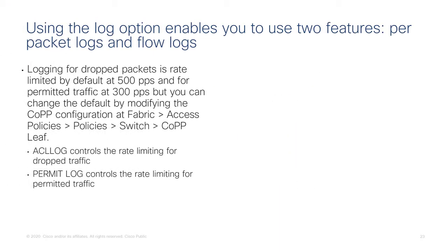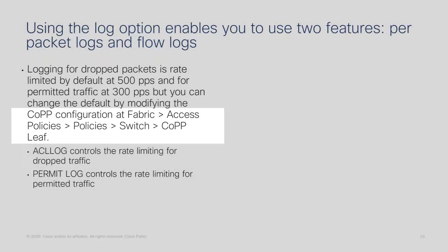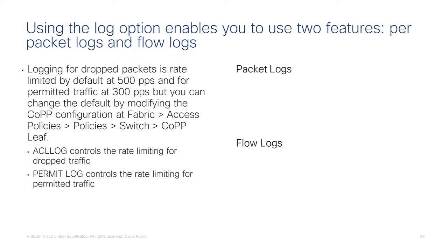The logging feature sends packet copies to the CPU — it is rate limited to a certain number of packets per second by default. You can also change the control plane policing rate limiting via configuration. The information is then displayed in two different views: packet logs and flow logs.